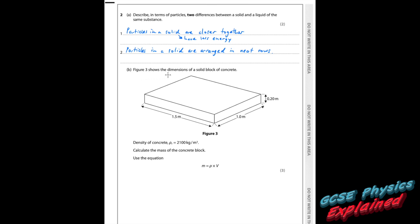Part B. Figure 3 shows the dimensions of a solid block of concrete. The density of concrete, rho, equals 2,100 kilograms per metre cubed. Calculate the mass of the concrete block using mass equals density times volume. To get the volume, do length times width times height. When you multiply those together and multiply by the density, that comes out as 630 kilograms.